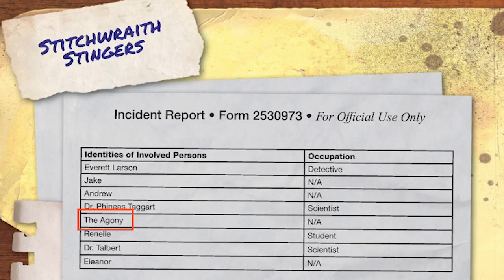The Agony: In the Ultimate Guide, the Afton amalgamation seen in the Stitchwraith Stingers was confirmed to be called The Agony. That was also how we found out the official name of the epilogues: the Stitchwraith Stingers. Before, we were just calling them the epilogues. Personally, I think the Afton amalgamation is a way cooler name than The Agony.